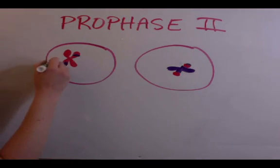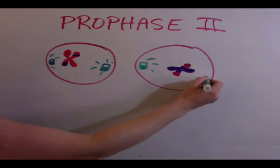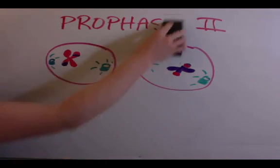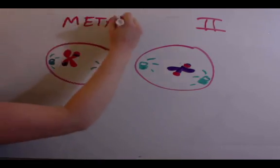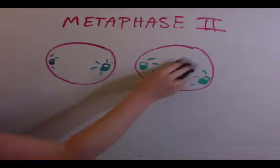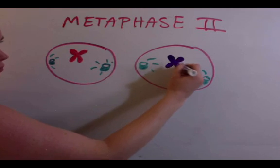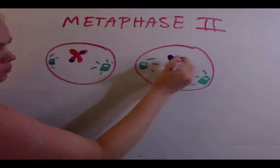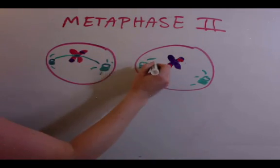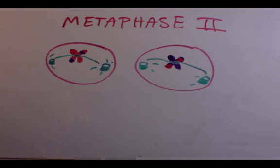In metaphase 2, the microtubules line up the chromosomes in the middle of the cell. Then, during anaphase 2, the chromosomes are pulled apart into their sister chromatids.